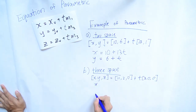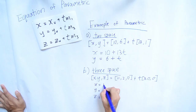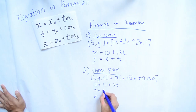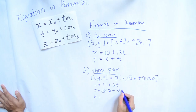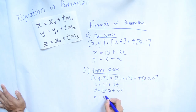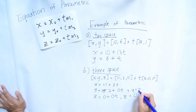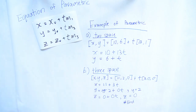The second example is three-space. We list out x, y, and z. The point of x is 11 with 3t. There is a correction: y equals 2 plus 0t, and z equals 0 plus 0t. So z equals 0 and y equals 2.